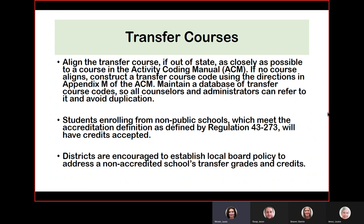For transfer courses from an in-state school, always look to the Activity Coding Manual — the course code should already be on the transcript, but if not, refer to it. If it's an out-of-state transcript and no course aligns, construct a transfer course code using directions in Appendix M of the Activity Coding Manual. Maintain a database of these transfer course codes so all counselors and administrators can reference it and avoid duplication. Students enrolling from non-public schools meeting the accreditation definition in Regulation 43-273 will have their credits accepted. Districts are encouraged to establish local board policy to address non-accredited schools' transfer grades and credit — this is not for the State Department to decide.